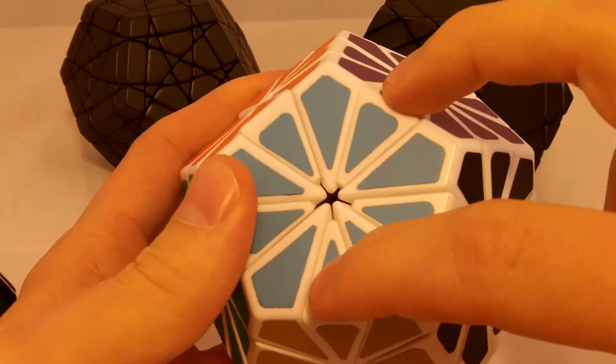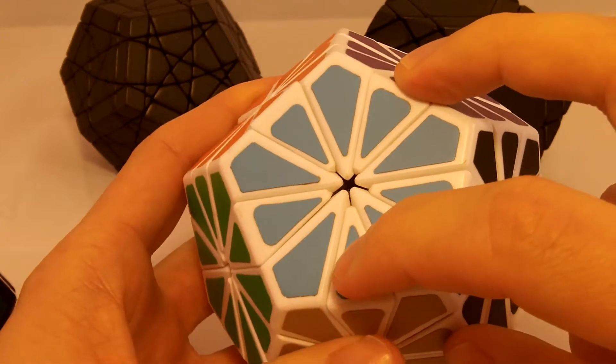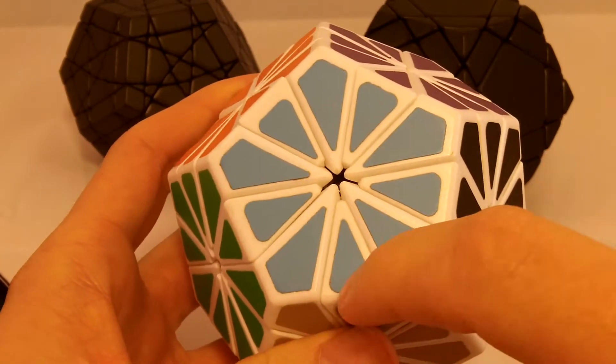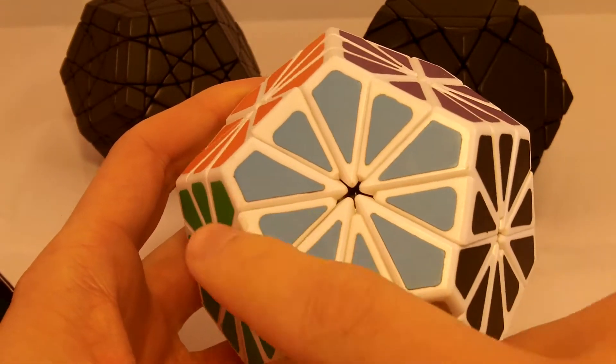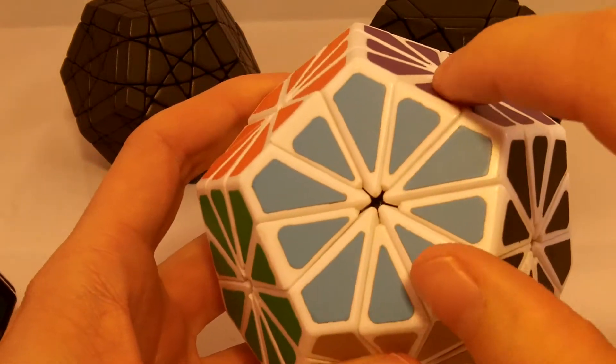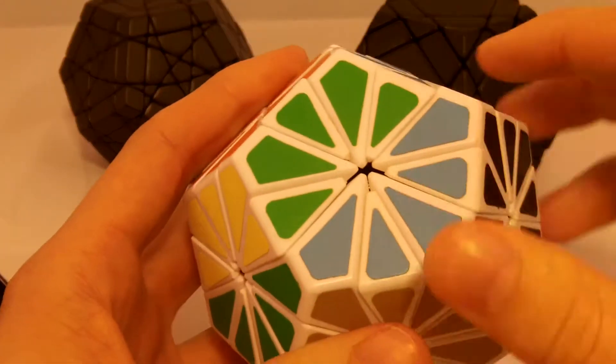Now you can see that that flips two pieces that are crossed from each other. If instead you want to flip two pieces that are adjacent to each other, you need to do a setup move. So I'm going to set this piece up right here. Now I'm going to flip those two.